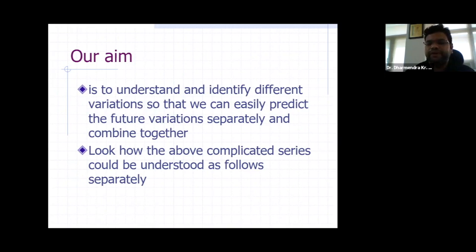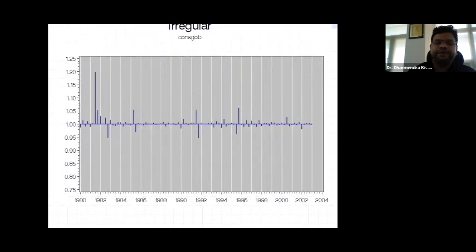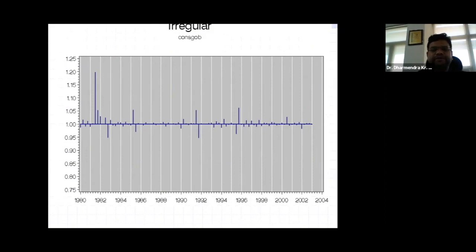So complicated series can be understood separately. These are the two basic aims of time series analysis: first, to identify different factors affecting the time series and make predictions about those components separately as well as combined; second, how complicated series can be understood separately. For example, if we plot a diagram for the irregular components, there will be no particular trend, since it is irregular.